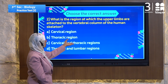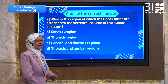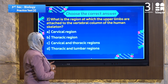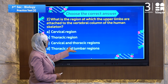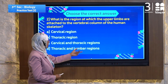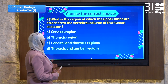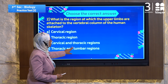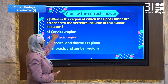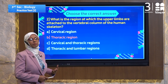Number B, thoracic region — it means the thoracic parts, that's the upper limbs, it may be the correct answer. Cervical and thoracic region together — no, not two parts. The thoracic and lumbar is the lower part of the skeleton. So the answer must be the thoracic region, number B. The upper limbs are attached to the vertebral column at the thoracic region.